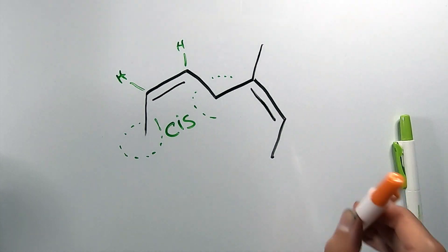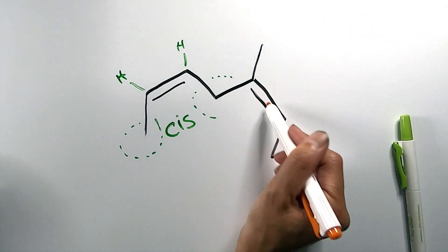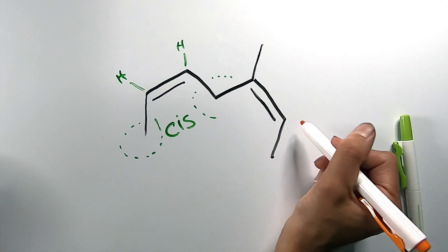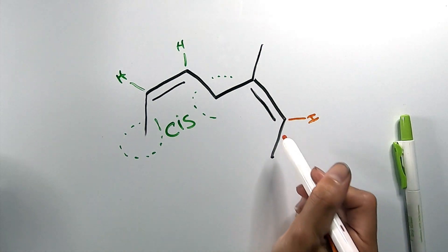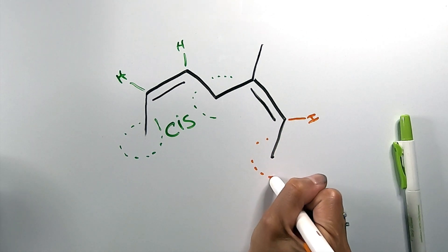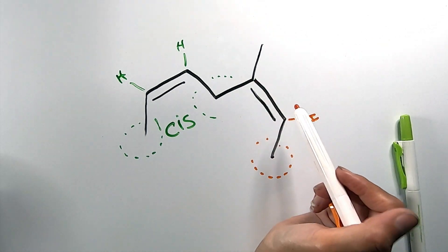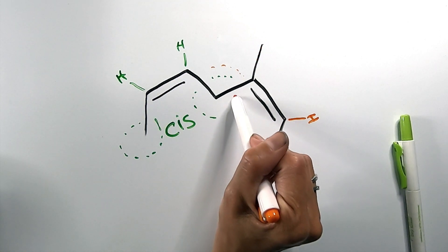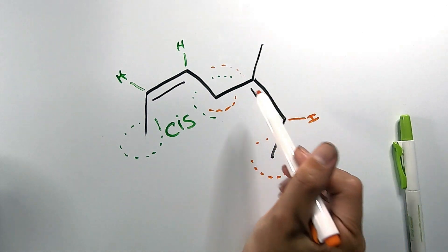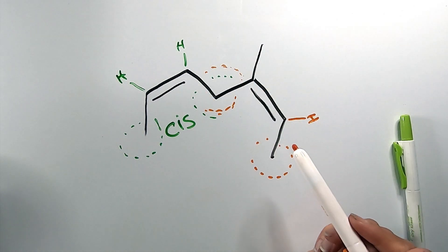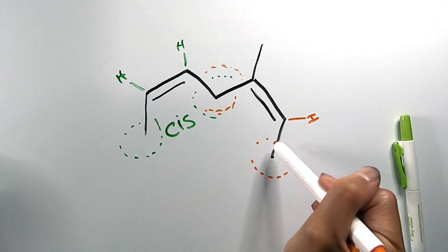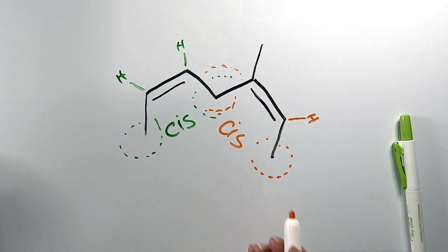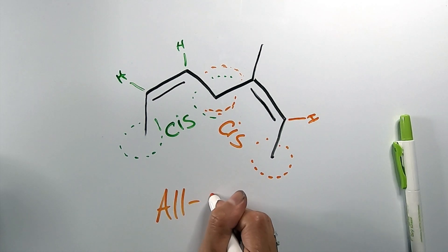Now let's do the same with the other double bond. Align your eyes parallel with this double bond — you might have to tilt it to the right a little bit. This carbon must have a hydrogen, so between the hydrogen and the methyl group, the methyl group gets priority. On the other carbon, the rest of the molecule is bigger than the methyl group, so that is the priority. Both priority groups are on the same side of the double bond, so this is also cis.